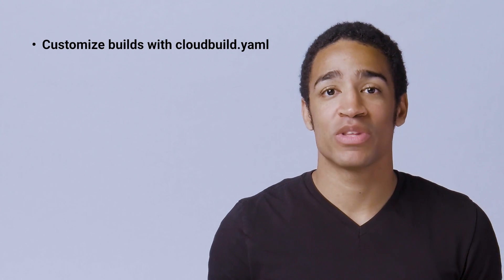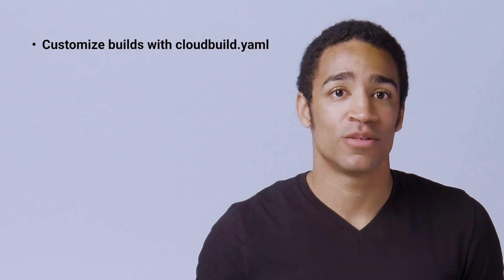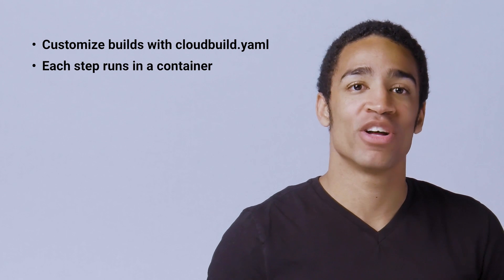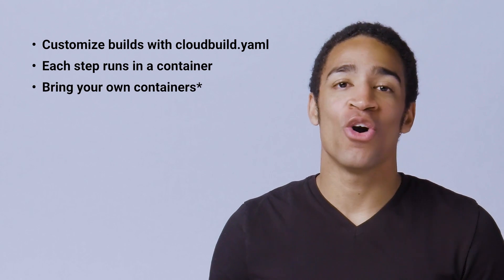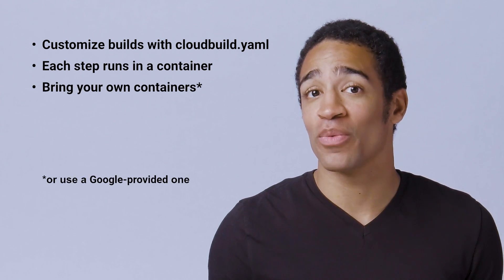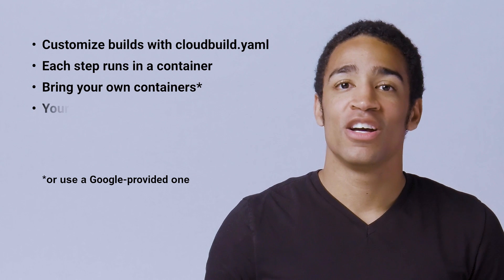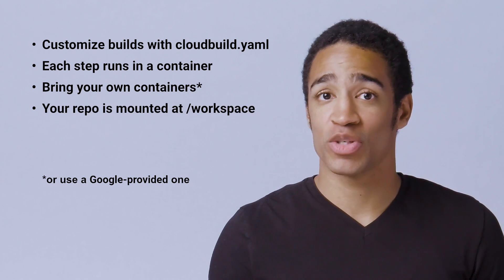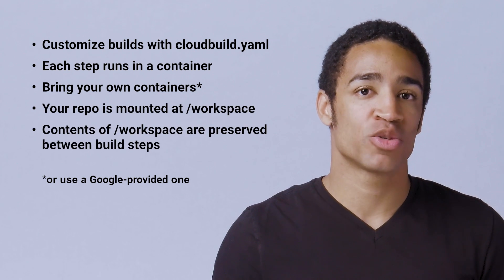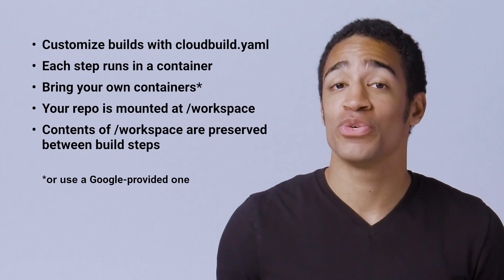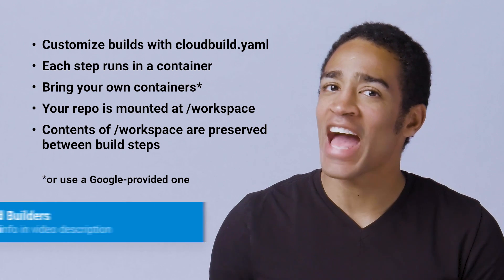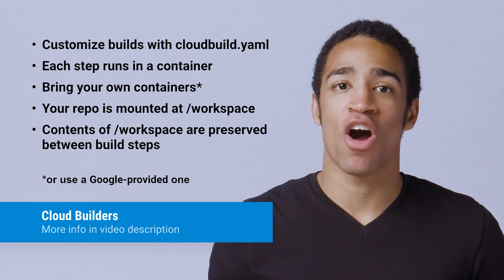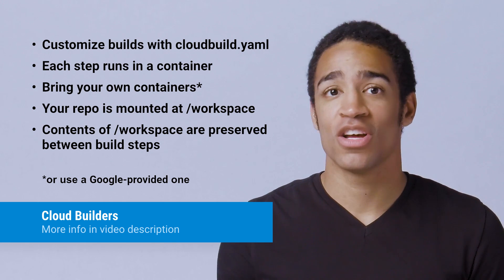To run this feature for yourself, here's what you need to know. You can customize build steps with a cloudbuild.yaml file. Each build step runs in a container. You can bring your own container images or use Google-provided ones. Your repository is mounted at /workspace, and contents of /workspace are preserved from one build step to another — exactly like Jenkins build pipelines, where artifacts are stashed or unstashed from one step to the next.